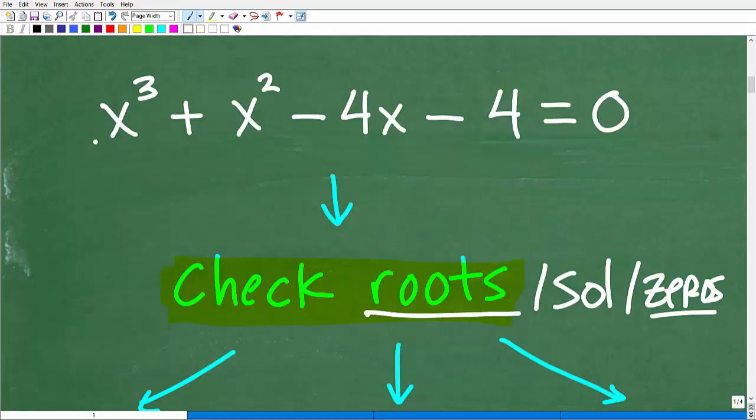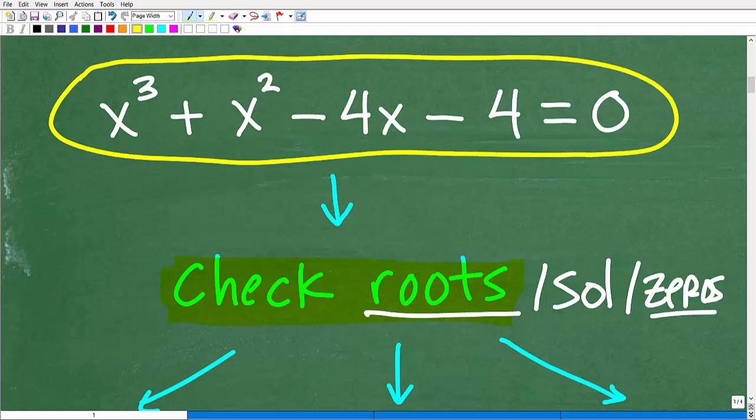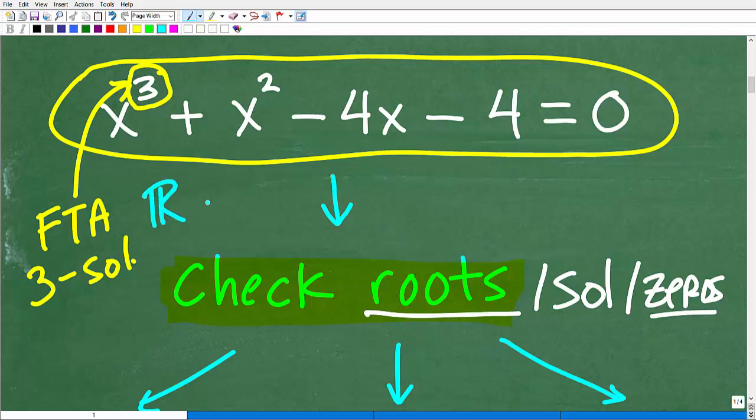Let's take a look at the solution to this problem right now. Basically, here we have a polynomial equation set equal to 0, and we're trying to solve this polynomial equation. So we're looking for the solutions, we're looking for the zeros, we're looking for the roots. A couple big picture concepts here: this is a third degree polynomial equation. The first thing you want to be thinking about is the fundamental theorem of algebra, which basically says you've got a polynomial equation here, it's third degree, so there will be three solutions.